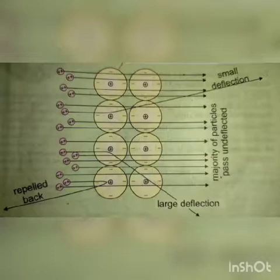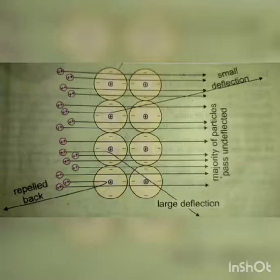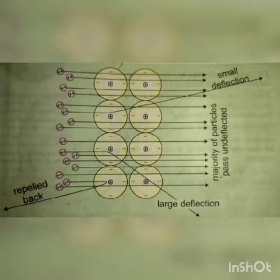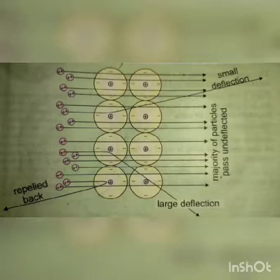Is experiment ke liye Rutherford ne alpha particles liye aur ek gold foil li jis ki thickness bahut hi kam thi — 0.00004 cm ki. Alpha particles emit hue radioactive elements se hain, koi bhi radioactive element ho sakta hai jaise radium ya polonium. Ye alpha particles helium nuclei hain — helium pe two positive charge hota hai aur helium ki ability hai ki wo matter mein kuch had tak penetrate kar jata hai. Is diagram mein jo yellow atoms show ho rahe hain ye gold foil hai, gold ke atoms hain, aur ye chote circles jisme two positive signs hain ye alpha particles hain.